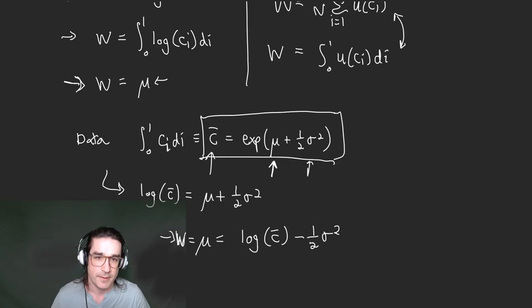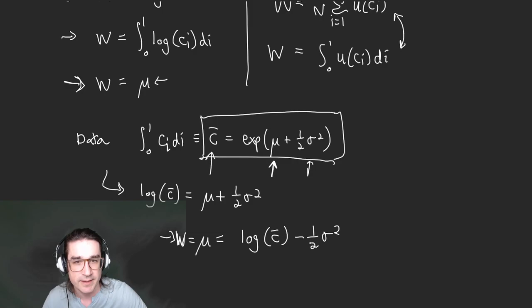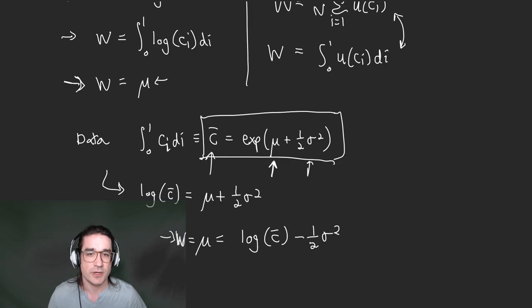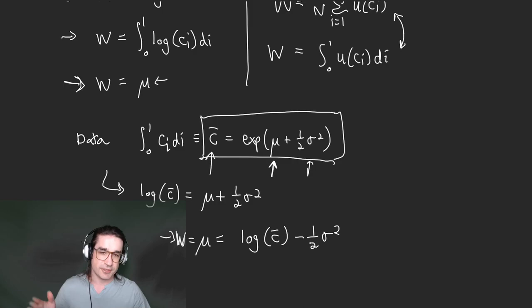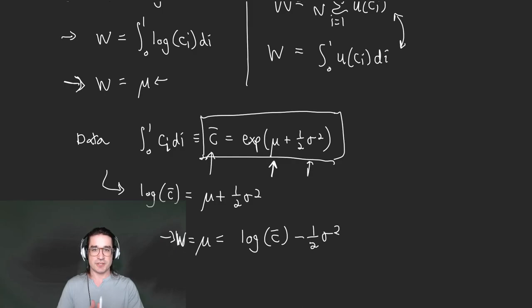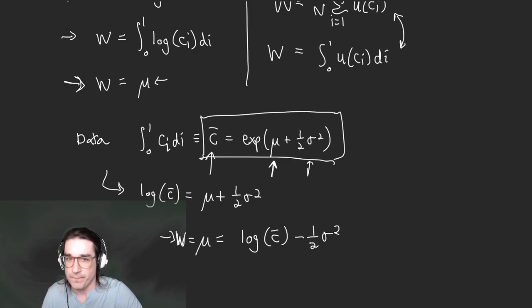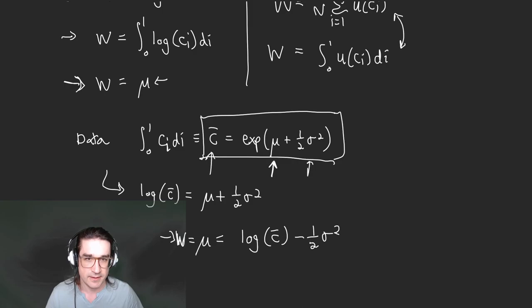The c-bar data point tells us something about the combination of mean and variance, but we need additional data on the actual distribution — not just averages. Countries don't simply report the average of the log of income or the variance of the log of income. If they reported sigma — the variance of log income — we wouldn't need to do all this reshuffling.